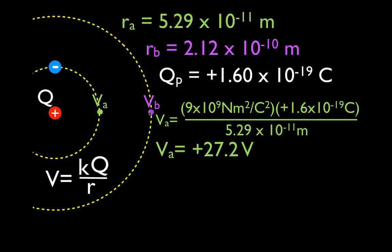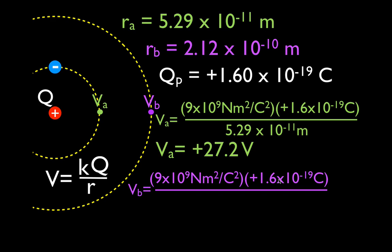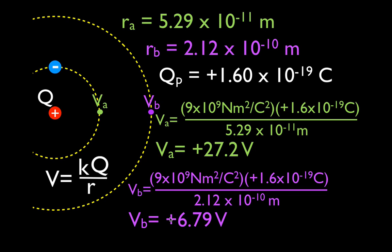Now we're going to calculate the potential at B. The potential at B is Coulomb's constant times the charge creating the potential, divided by the distance — which is greater in this case. The potential at B is plus 6.79 volts. So the potential when you're close to a positive charge is high — 27.2 — and as you move away, the potential decreases to plus 6.79 volts. It would continue to decrease until infinitely far away, where the potential is zero. So at A we have plus 27.2 volts, and at B we have plus 6.79 volts.